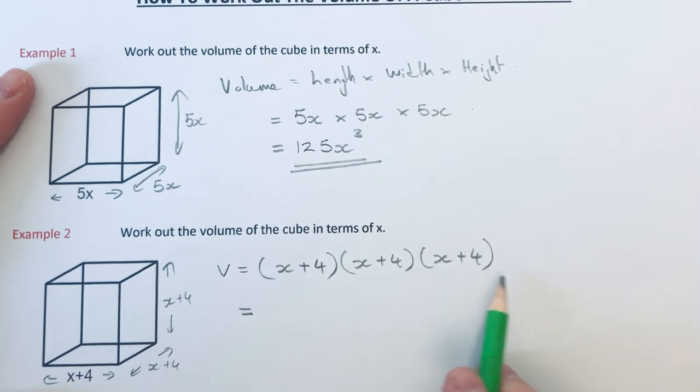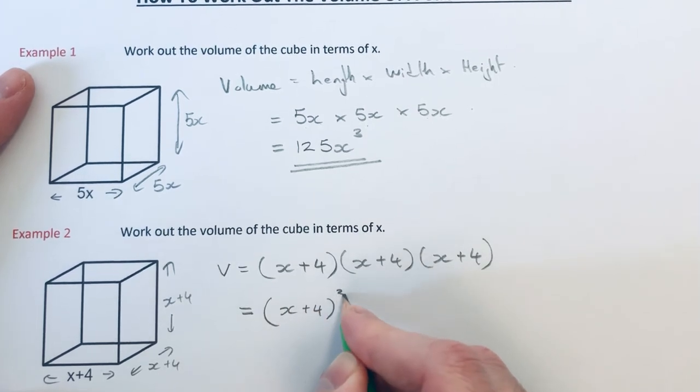Now if you know how to multiply it in triple brackets, you could expand that expression. Or you could just write that as x plus 4 cubed.